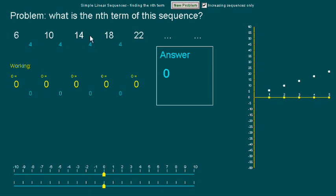On the screen I've got the sequence 6, 10, 14, 18, 22.